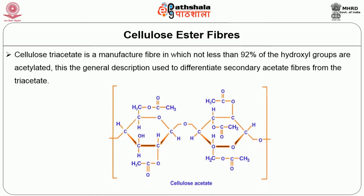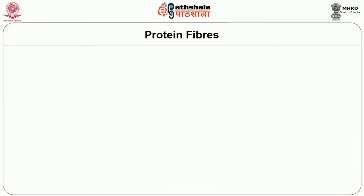Cellulose acetate is a manufactured fiber in which the hydroxyl groups are acetylated. Cellulose triacetate is a manufactured fiber in which not less than 92% of the hydroxyl groups are acetylated. This is the general description used to differentiate secondary acetate fibers from triacetate fibers.